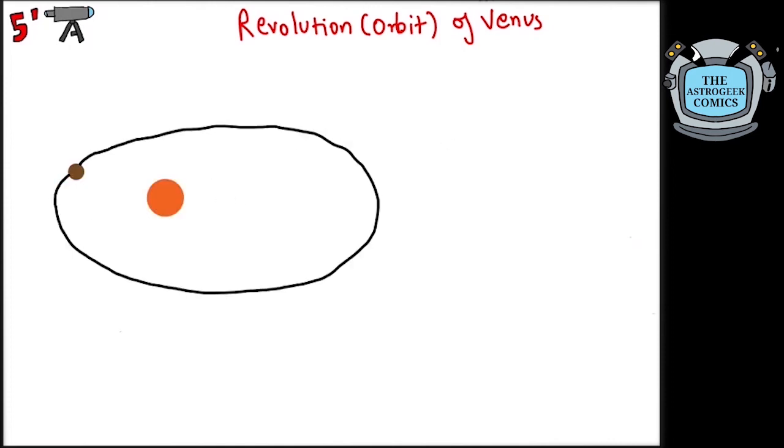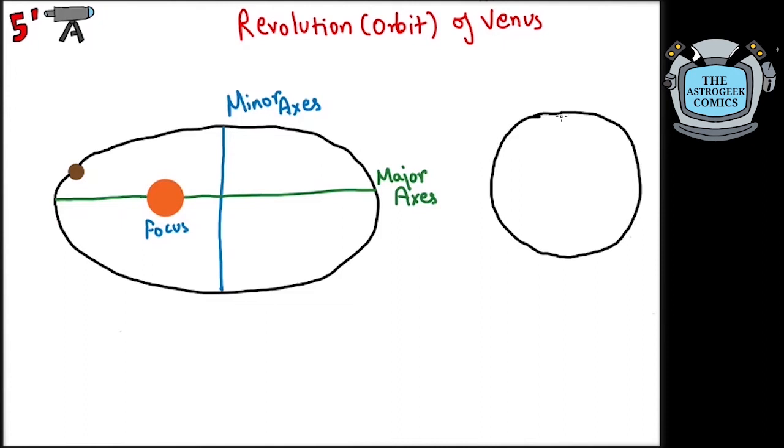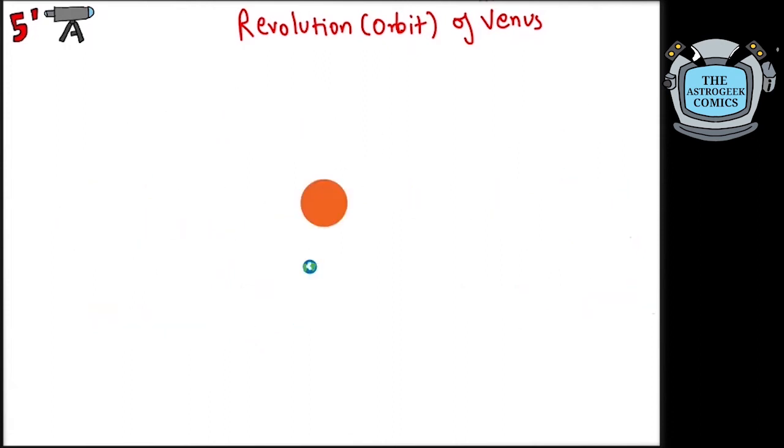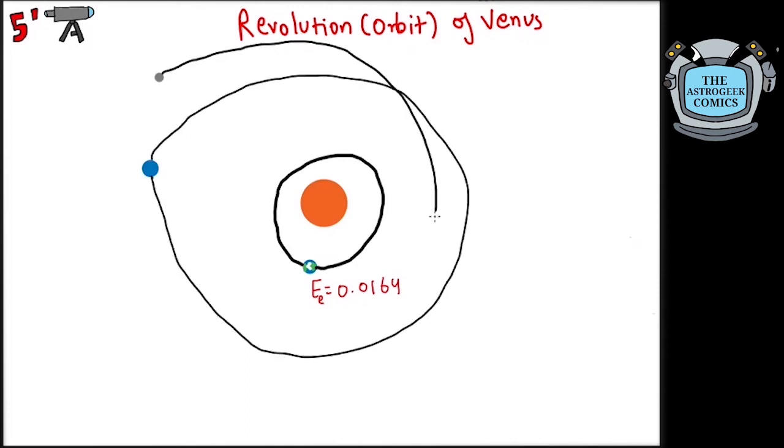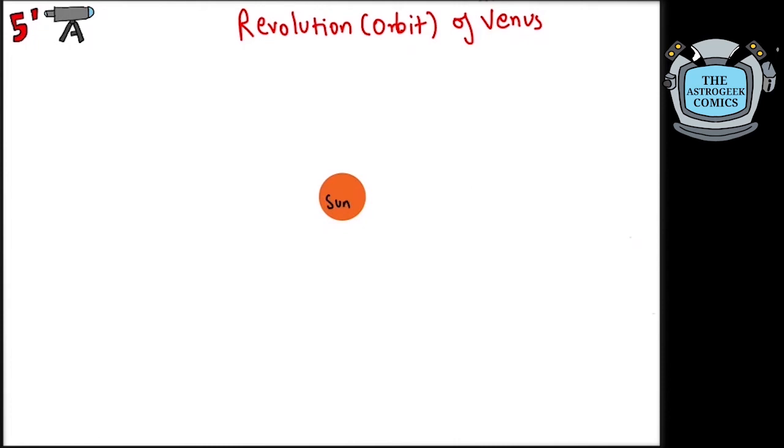Kepler showed that orbits of all planets are elliptical with the Sun at the focus. Circle is a special ellipse with major axis equal to the minor axis. The degree of elliptical nature is measured by eccentricity. The Earth has an eccentricity of 0.0164. Pluto, which has a very eccentric orbit, has an eccentricity of 0.244.